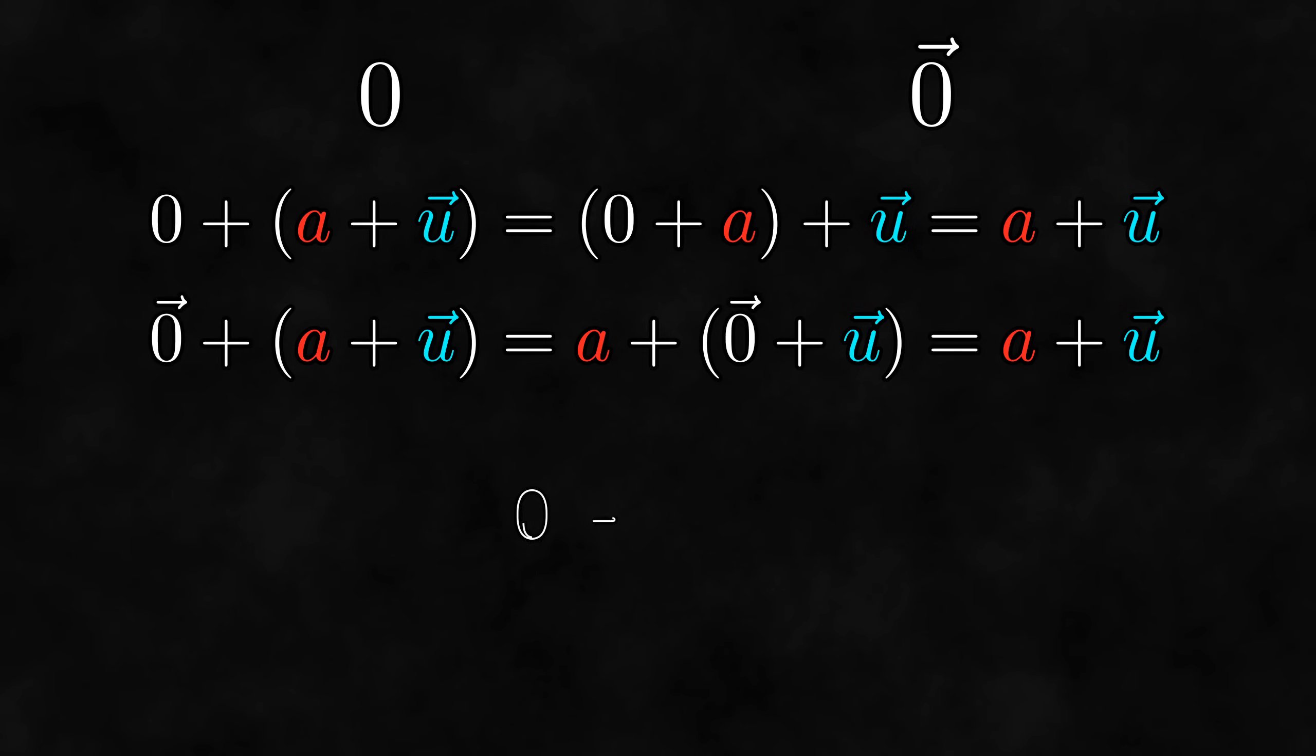In fact, think about the sum of the scalar zero and the vector zero. Because adding the scalar zero doesn't change the result, this is equal to the zero vector. But because adding the zero vector doesn't change the result, this is also equal to the scalar zero. This means that the scalar zero and the vector zero are actually equal. Thus, we don't need to distinguish between the two, and from now on I'll call both the scalar zero and the vector zero just zero.